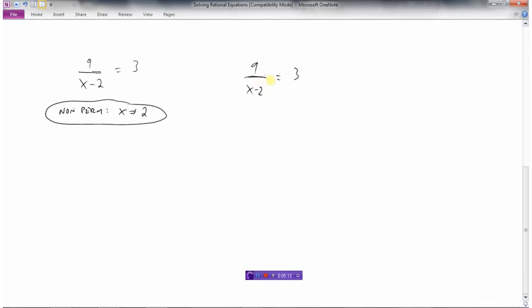When we're solving rational equations, we want to get rid of the fractions. It's never nice working with fractions when we're solving equations. Right now I have 9 divided by x minus 2. So I'm going to multiply both sides by x minus 2 to get rid of the denominator.